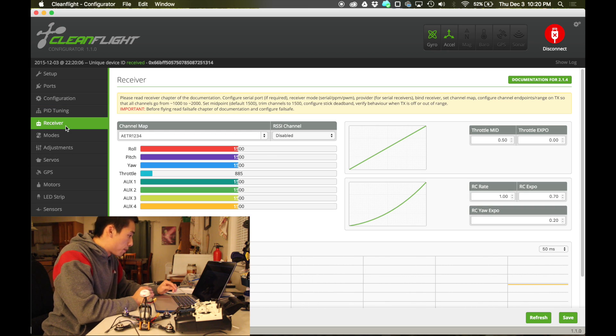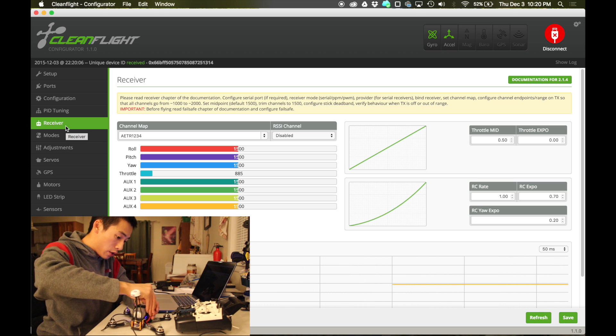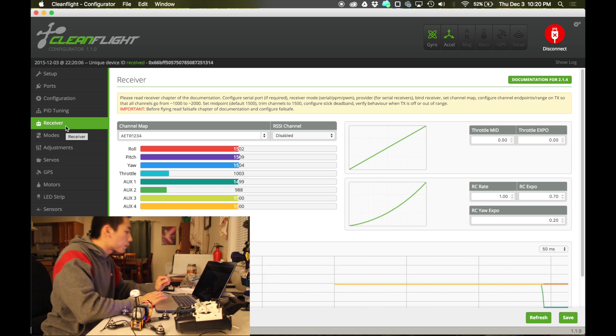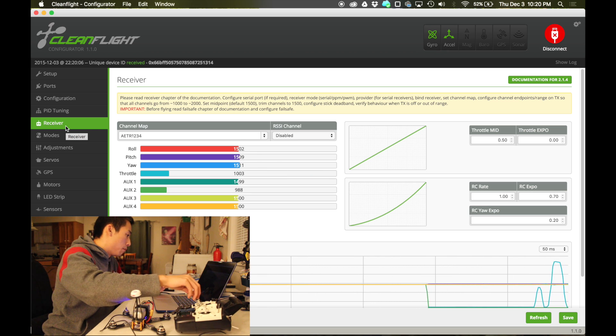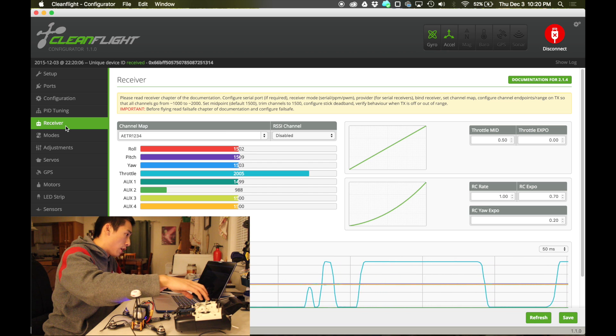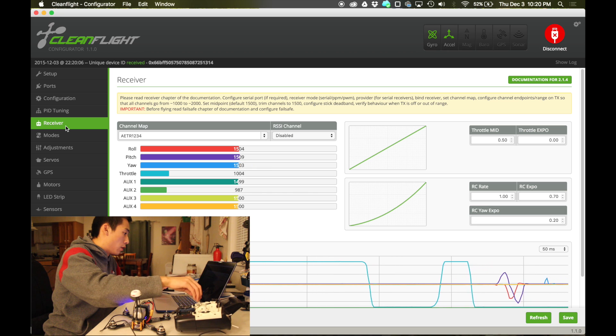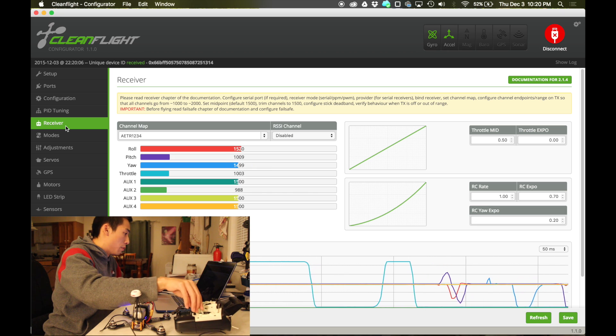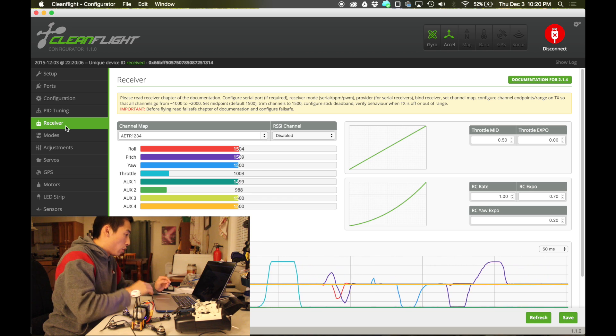Come over here to the receiver first and plug in your quad so that your receiver can get power. Right now I can see what my minimum and maximum values are for my transmitter. I've trimmed these so that it is as close to 1000 and 2000 as possible. Same thing with my roll, pitch, and yaw. They all get to their maximum mins at 1000 and 2000.